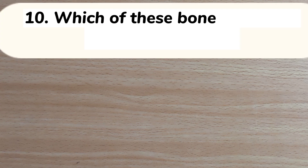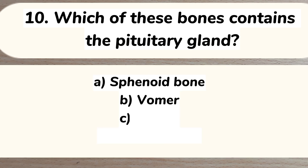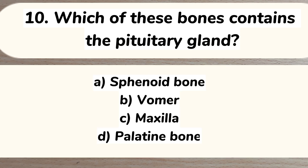Number 10. Which of these bones contains the pituitary gland? A. Sphenoid bone, B. Vomer, C. Maxilla, D. Palatine bone. Answer: A. Sphenoid bone.